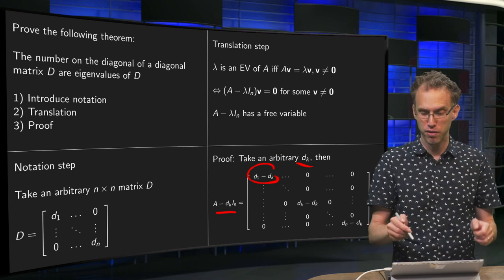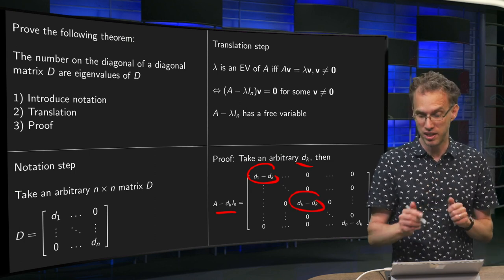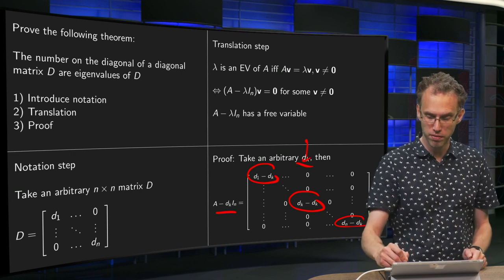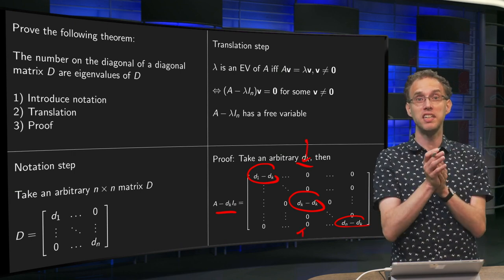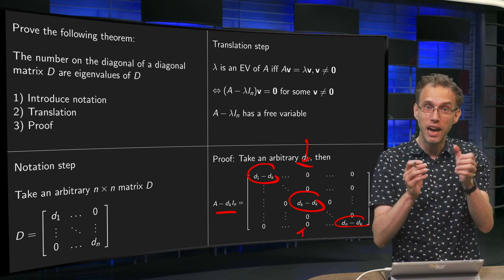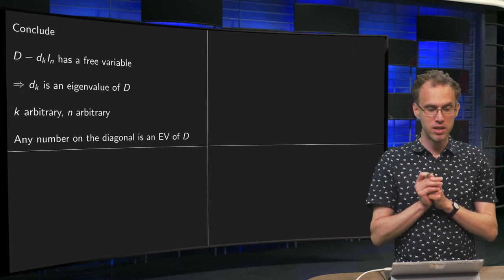d₁ minus dₖ, we get everywhere a mess. But somewhere over here we get a dₖ minus dₖ. And here again mess with zeros above and below. But you have dₖ minus dₖ, that's zero. You have a column with all zeros.